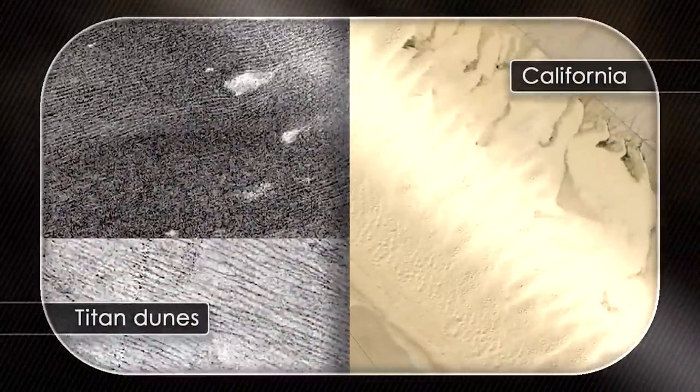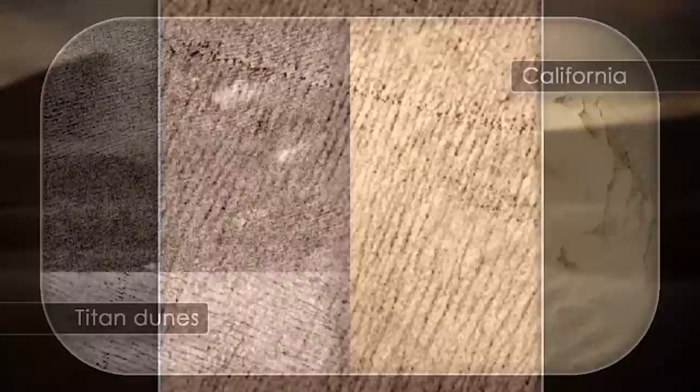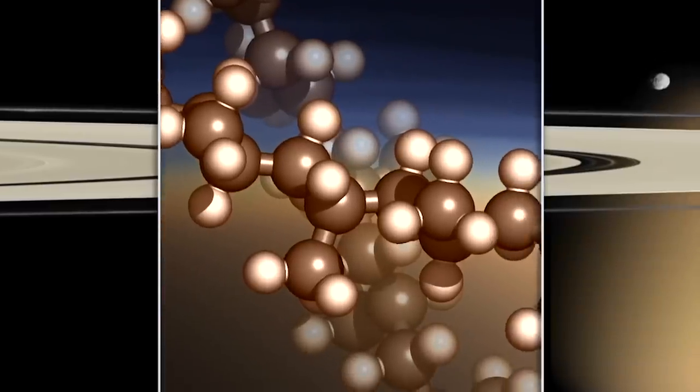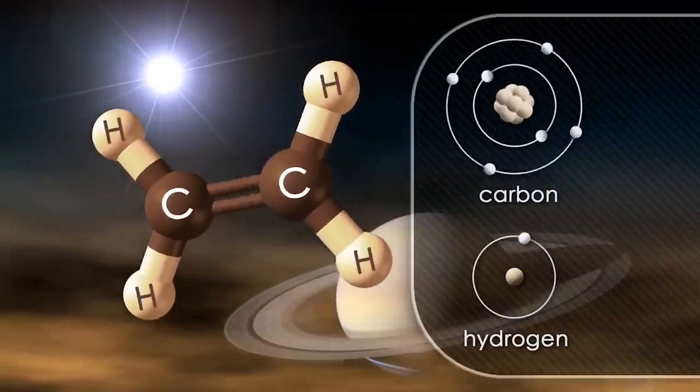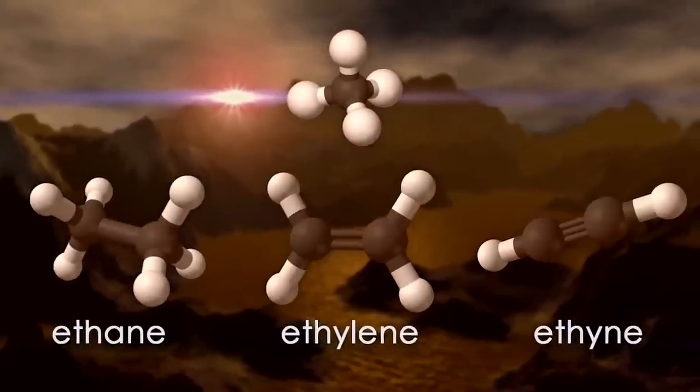there are surprisingly bizarre characteristics on its surface. Instead of sand or dirt, Titan's surface is covered by non-silicate granules.